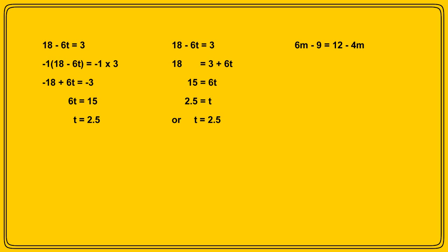If we add 4m to both sides, we'll have 10m on the left hand side, and that's much easier to deal with because it's positive. So let's do that. Add 4m to both sides, and we get 10m subtract 9 on the left, and just 12 on the right, as adding 4m cancels out the subtract 4m we already have.